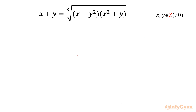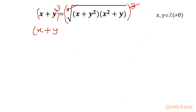Let's get started by cubing both sides — we cube the LHS and the RHS as well. The cube and cube root terms cancel. In the LHS we will have (x + y) whole cube, and in the RHS we have the product term (x + y)² and (x² + y).